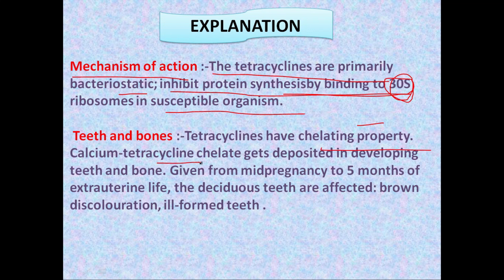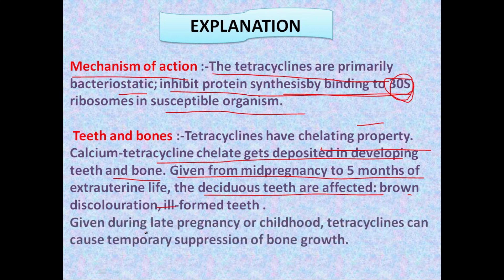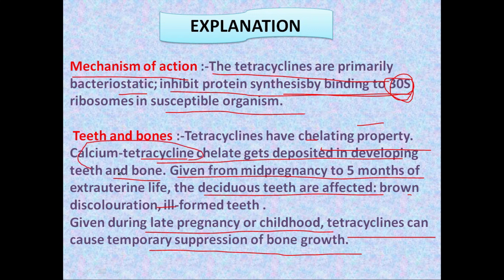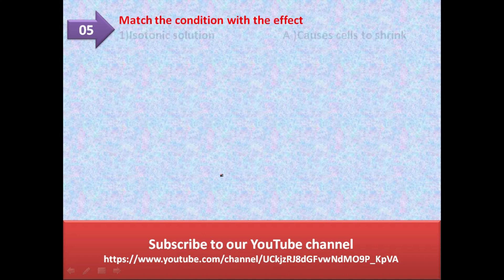Tetracyclines have chelating property. Calcium and tetracycline chelate gets deposited in developing teeth and bone. Given from mid-pregnancy to the fifth month of extra-uterine life, the deciduous teeth are affected, causing brown discoloration and ill-formed teeth. Given at late pregnancy or childhood, tetracycline can cause temporary suppression of bone growth. Because of this chelating property, calcium deposited in teeth leads to discoloration.